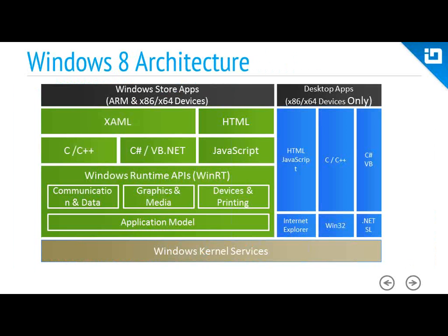You have how you currently write apps now — your desktop apps for 32-bit and 64-bit Intel devices. This is where the .NET stack is: Win32, C#, C++, all that great stuff. Well, Windows Store apps have a whole new runtime APIs of their own. This is what's referred to as WinRT — the Windows Runtime APIs. This contains your application model, your devices and printing, graphic media, everything required to make a Windows app run. Now, this is not to be confused with Windows RT, which is an operating system. You have Microsoft Windows RT and also the Surface RT.